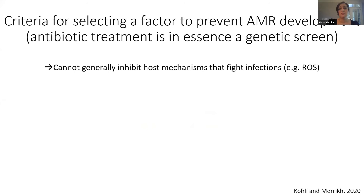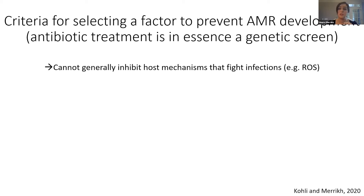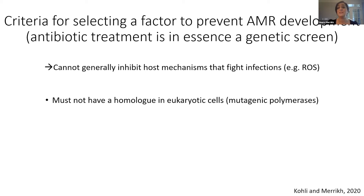I want to set up some criteria that we described with Raoul Koli in a small perspective last year on how you can identify what is a good evolvability factor — which mutagenic factors should be blocked. It is not a good idea to try and inhibit evolution by generally inhibiting a host mechanism, especially one that is critical for fighting an infection, such as the ROS attack that hosts put on pathogens. What we really need is a specific bacterial target that we can inhibit that will not cause problems for humans fighting the infection itself.